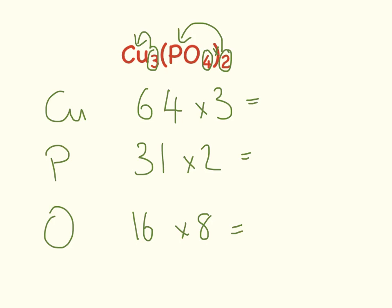So 64 times 3 equals 192. 31 times 2 equals 62. And 16 times 8 equals 128. Add those all together, 128 plus 62 plus 192 equals 382.